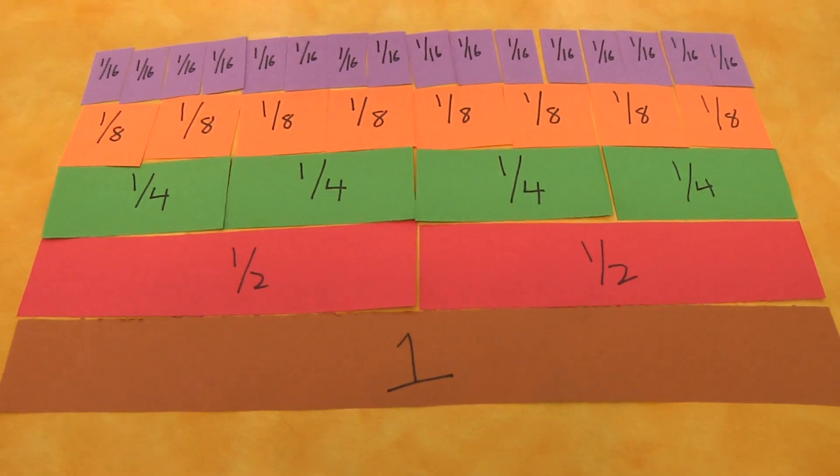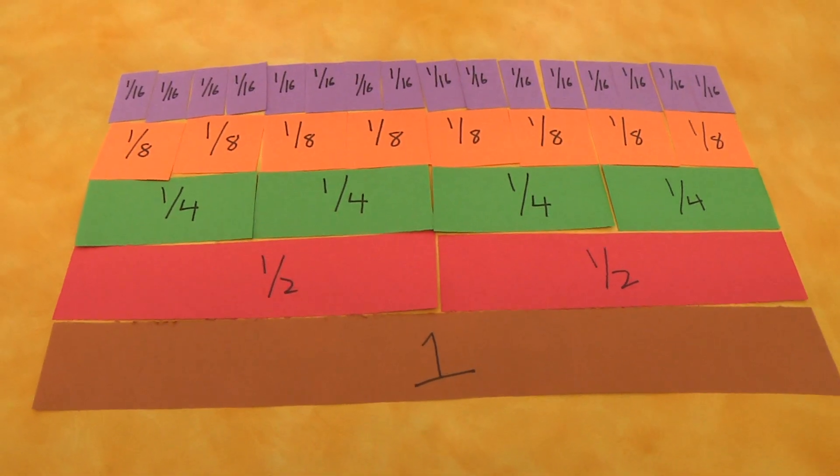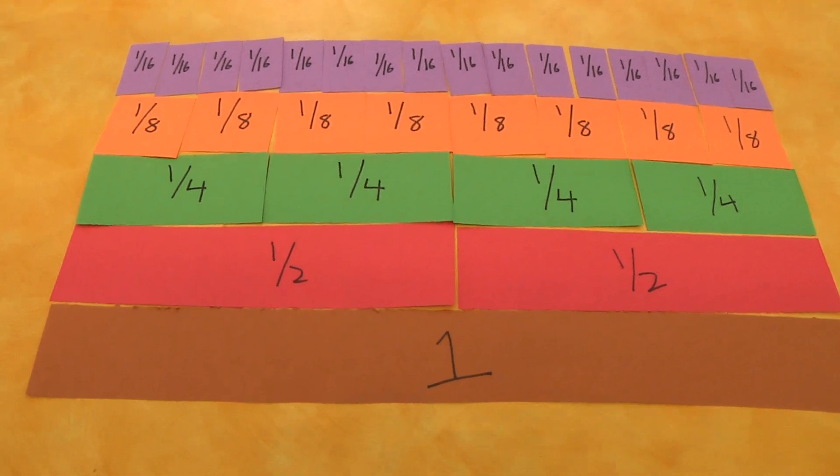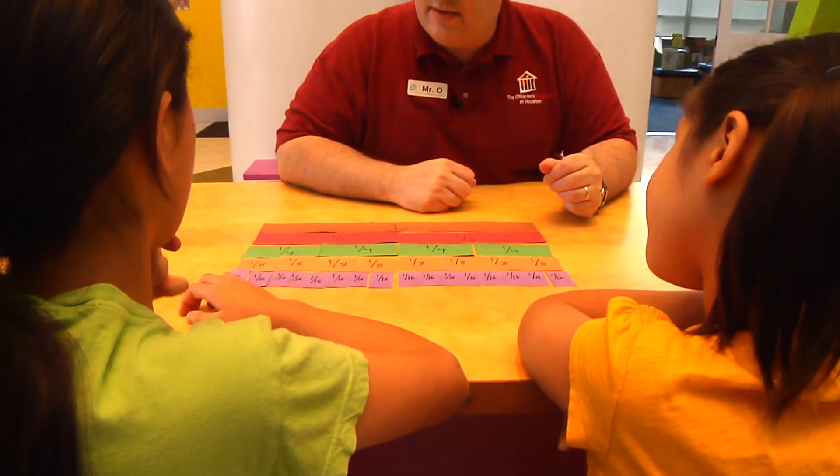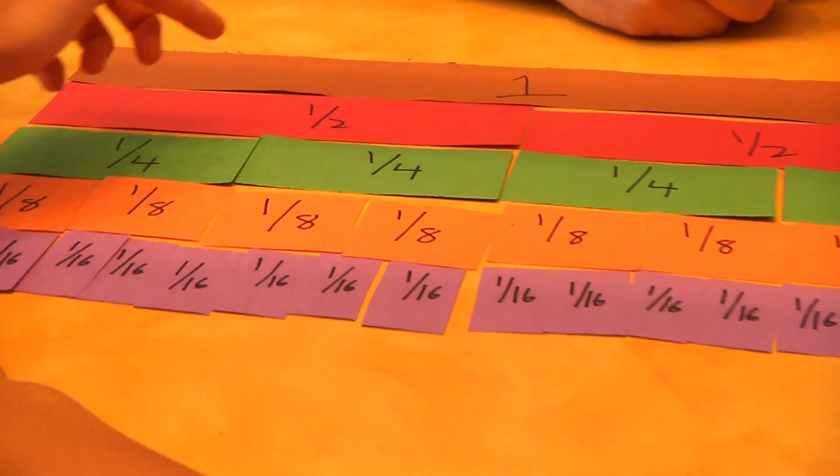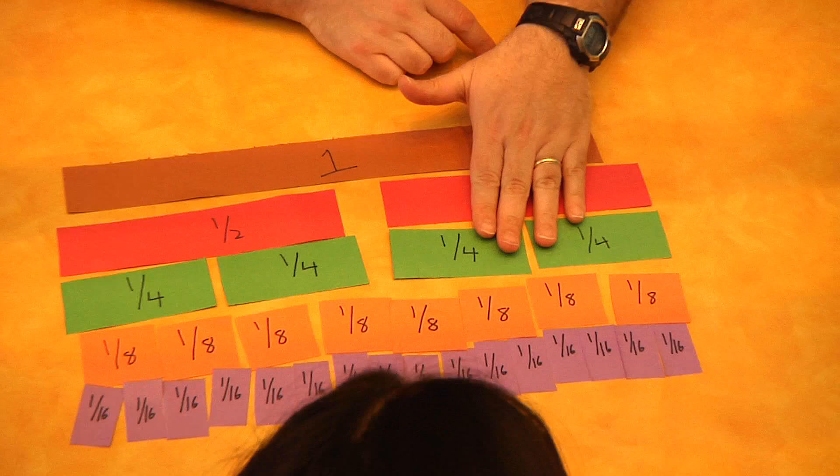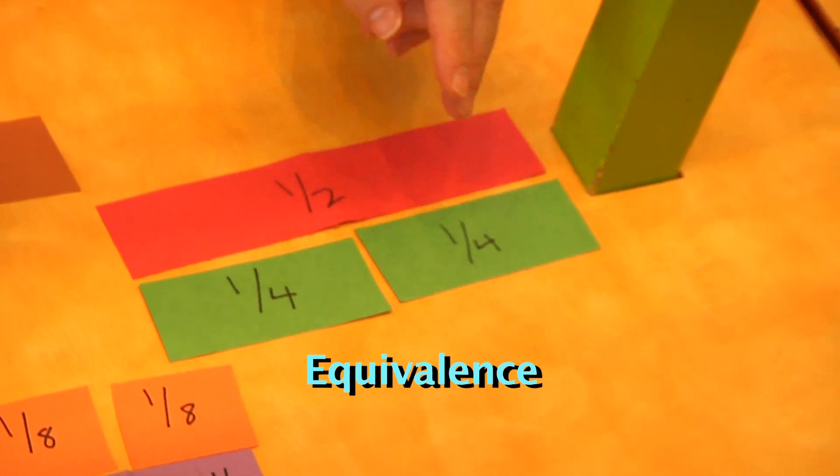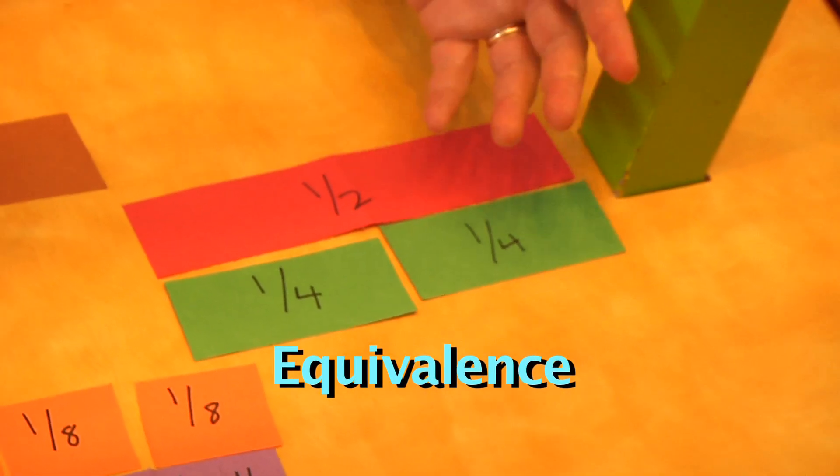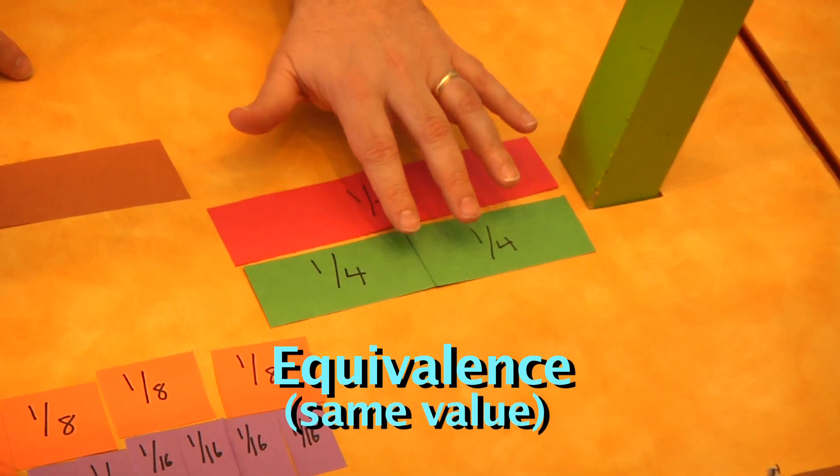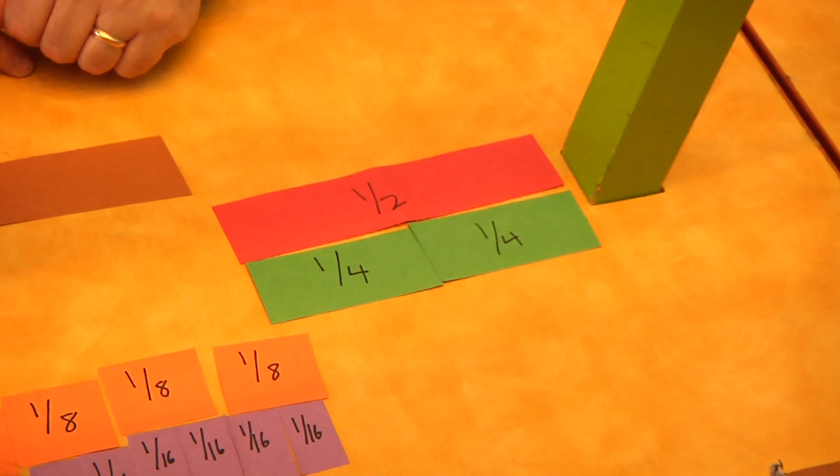Now let's lay them out so each one has its own row. First the whole, then halves, fourths, eighths, and sixteenths. So take a look at the strips. What patterns do you see? Well, I see that two fourths are the same length as one half. Good. That's what we call equivalence. When two things are equivalent, it means they have the same value. One half is equivalent to two fourths.